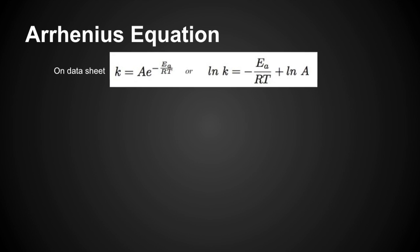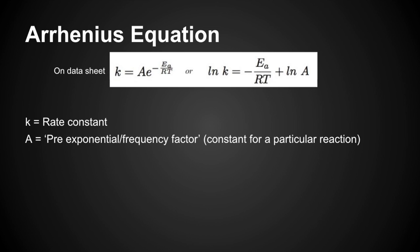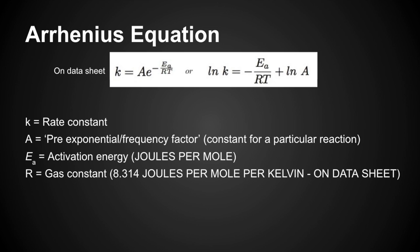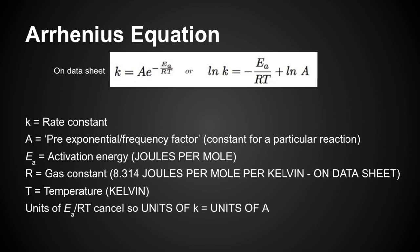The Arrhenius equation is on the datasheet. Running through the terms: k is the rate constant; A is the pre-exponential or frequency factor, constant for a particular reaction; Eₐ is the activation energy in joules per mole (not kilojoules); R is the gas constant, 8.314 J mol⁻¹ K⁻¹, also on the datasheet; T is temperature in kelvin. The units of Eₐ/RT cancel, so the units of k are the same as the units of A.